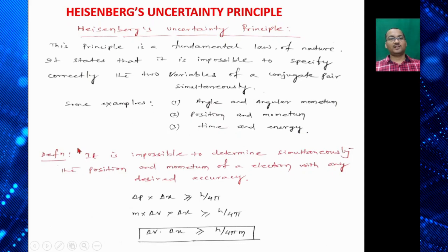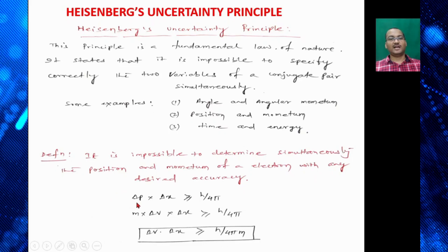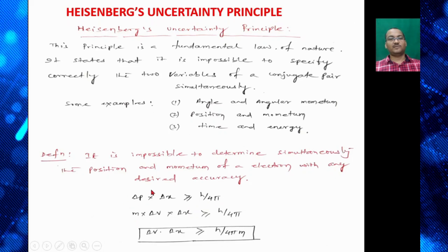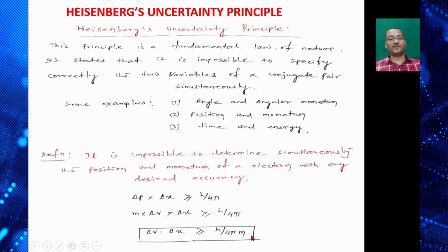So the definition of Heisenberg's uncertainty principle is it is impossible to determine simultaneously the position and momentum of an electron with any desired accuracy. So mathematically we can write ΔP × ΔX ≥ h/4π. ΔP = m × ΔV × X. So that is ≥ h/4π. So ΔP × ΔX ≥ h/4πm.